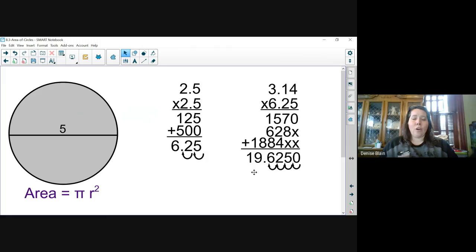So the area of our circle with a diameter of 5 units is 19.625 of a unit, or 19.6.